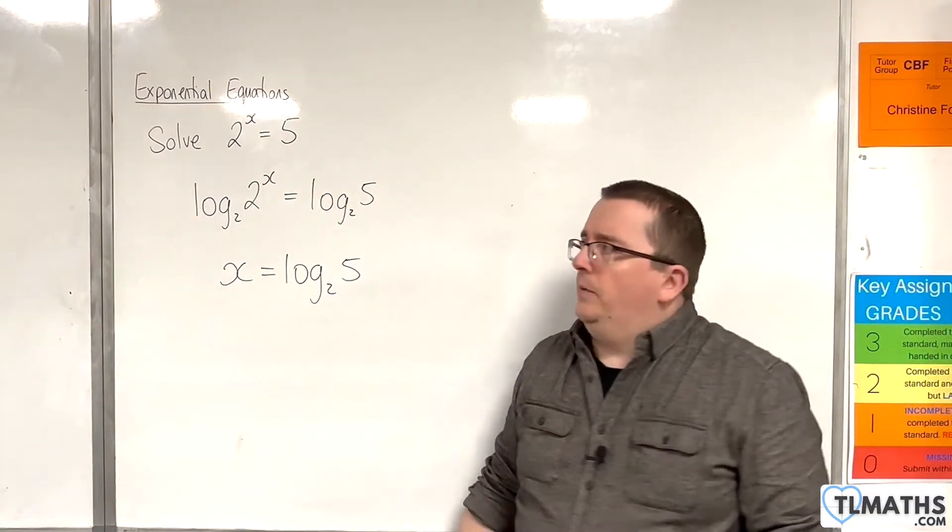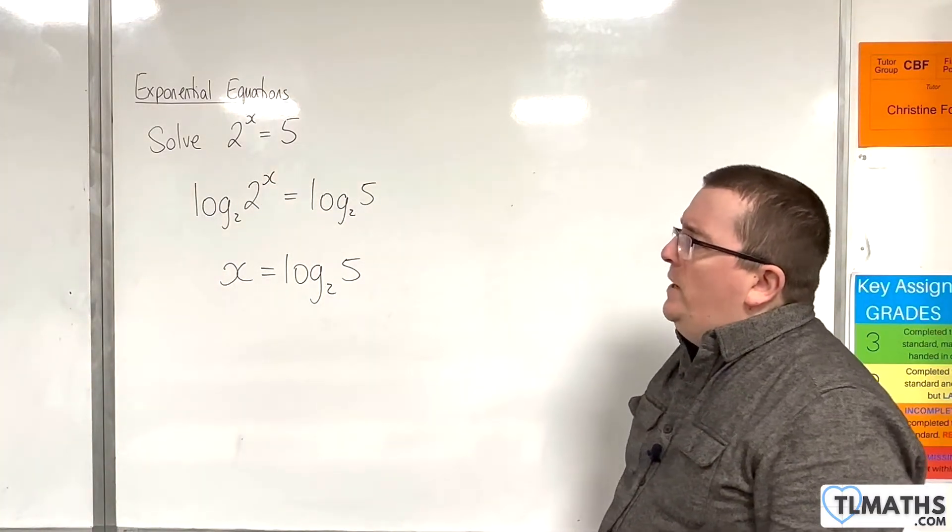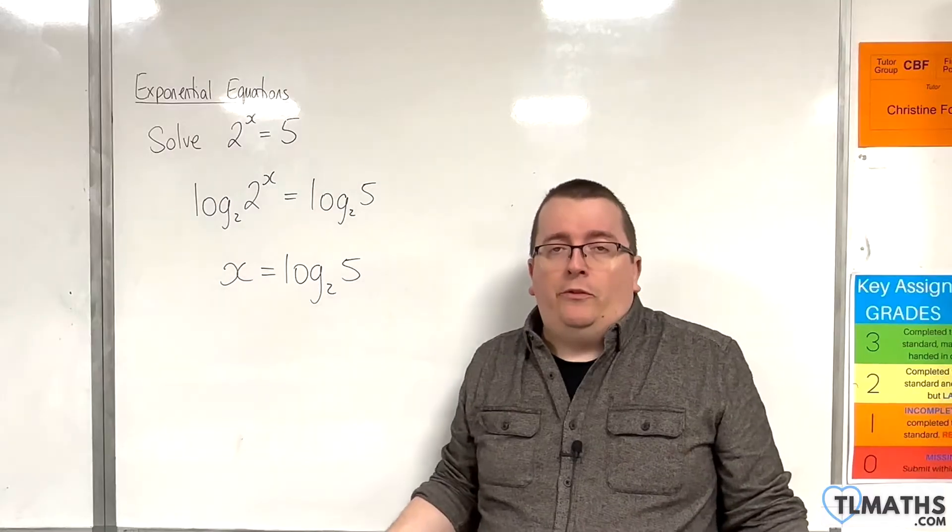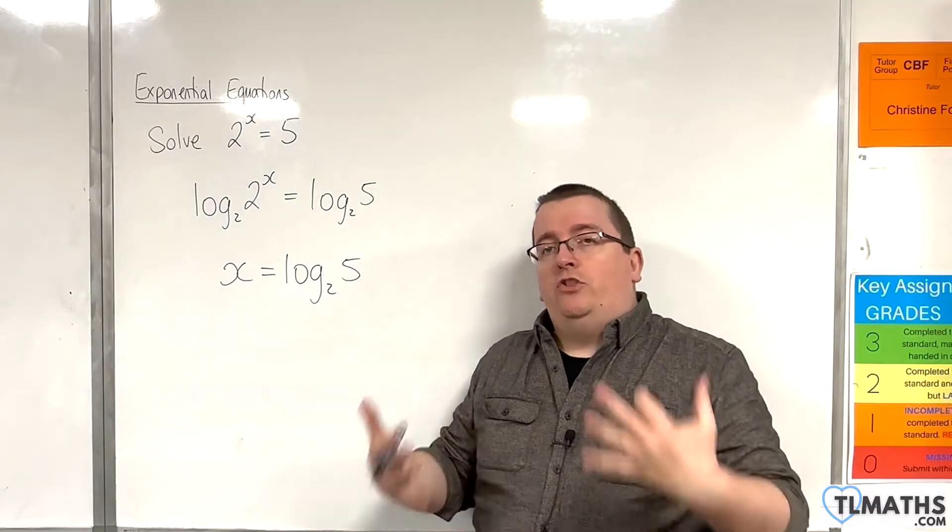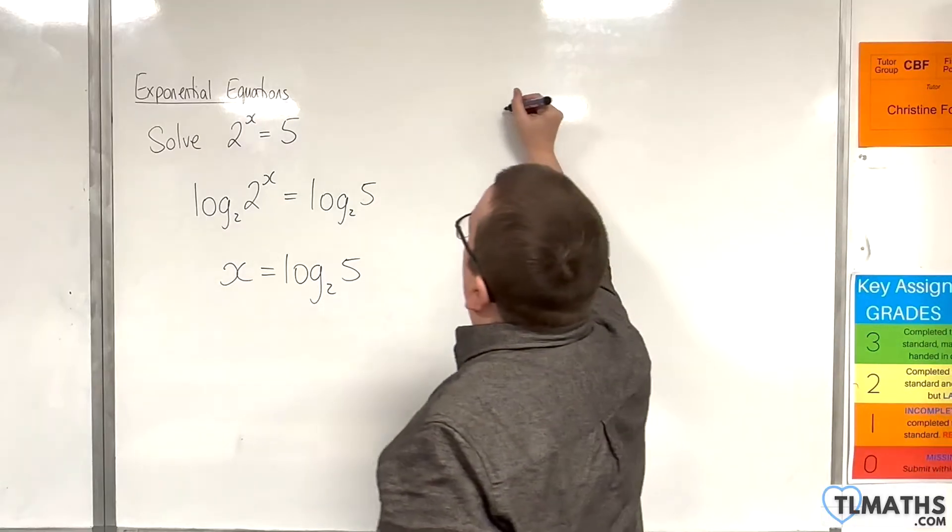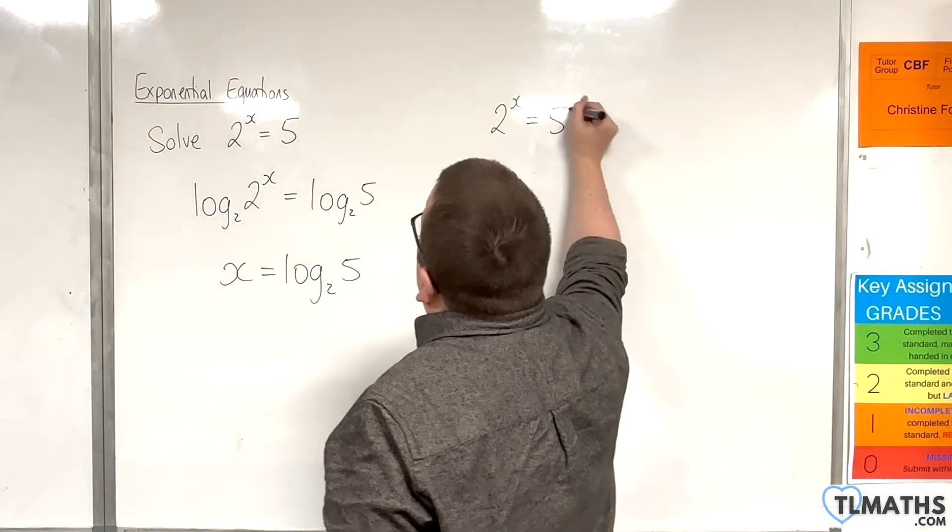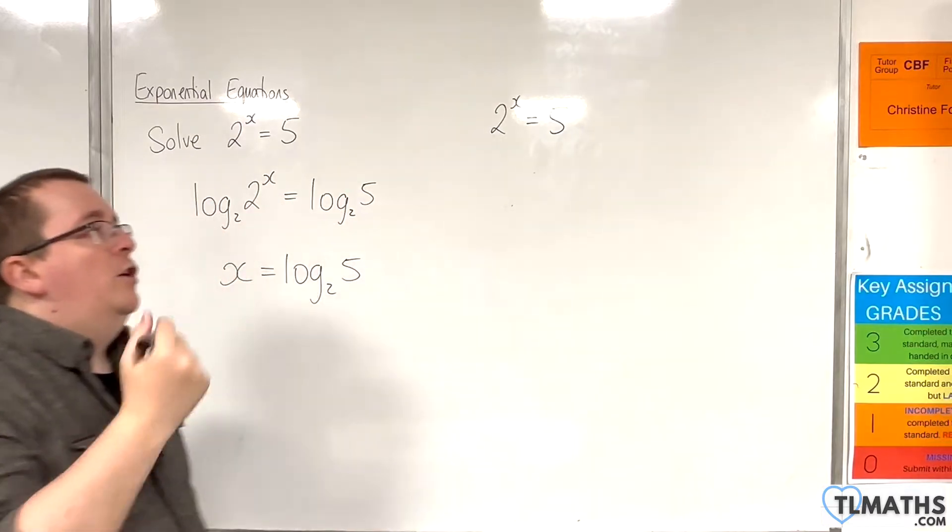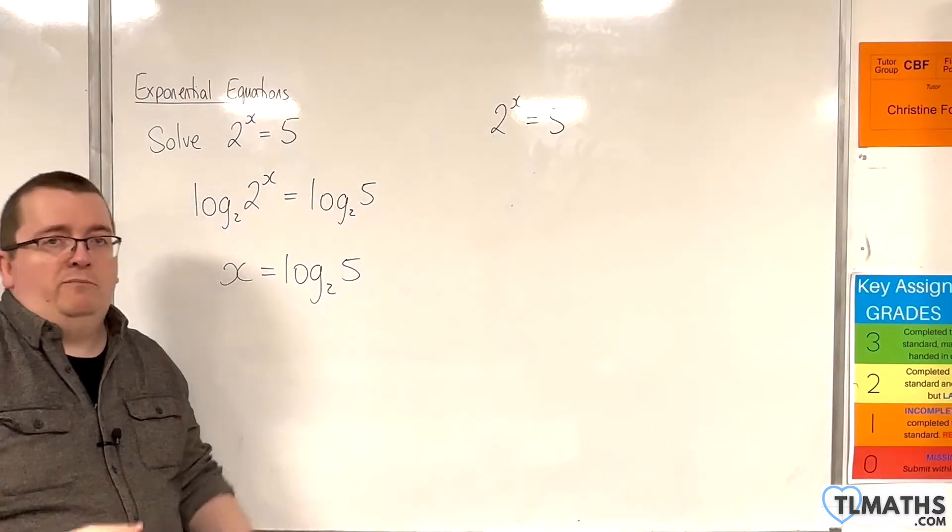Now, the question is, did we need to take log base 2 of both sides? Could we have chosen another base to take? Can we solve 2 to the x is equal to 5 by instead taking log base 3 of both sides?